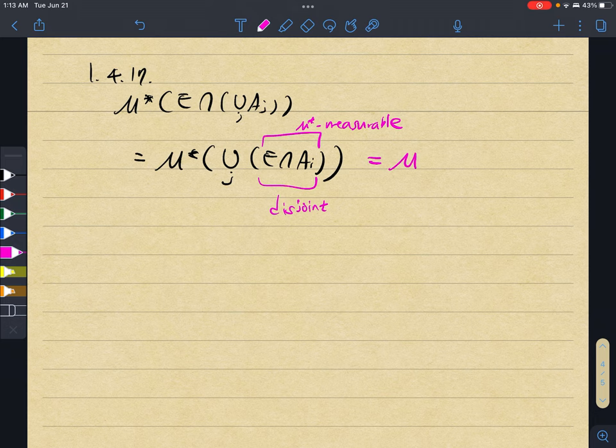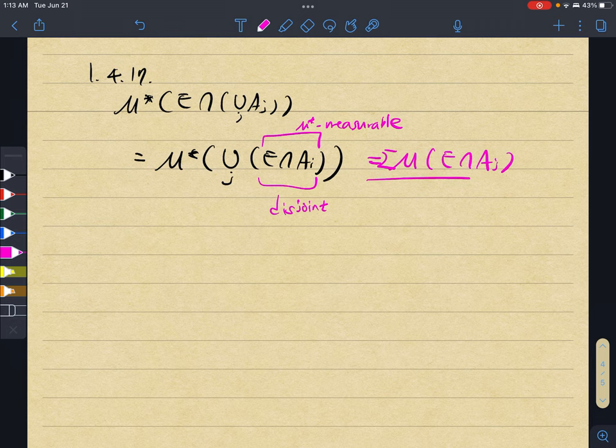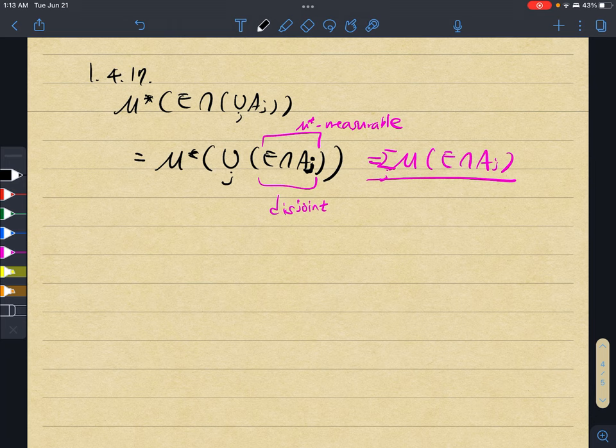then we can show that this holds—that is, the summation automatically holds. So we just need to show that E ∩ Aj is measurable. Sorry for a bit of bad notation.